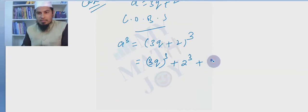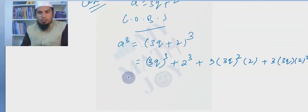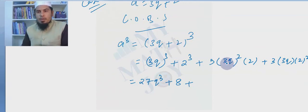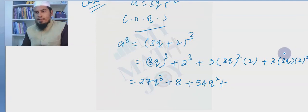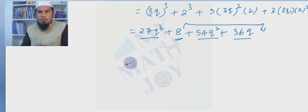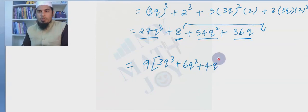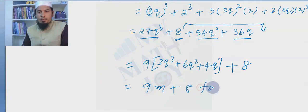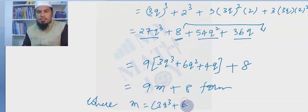Expanding (3q+2)³: a³ = 27q³ + 8 + 3(9q²)(2) + 3(3q)(4) = 27q³ + 54q² + 36q + 8. I keep the 8 on the right side and take 9 common from the remaining terms.